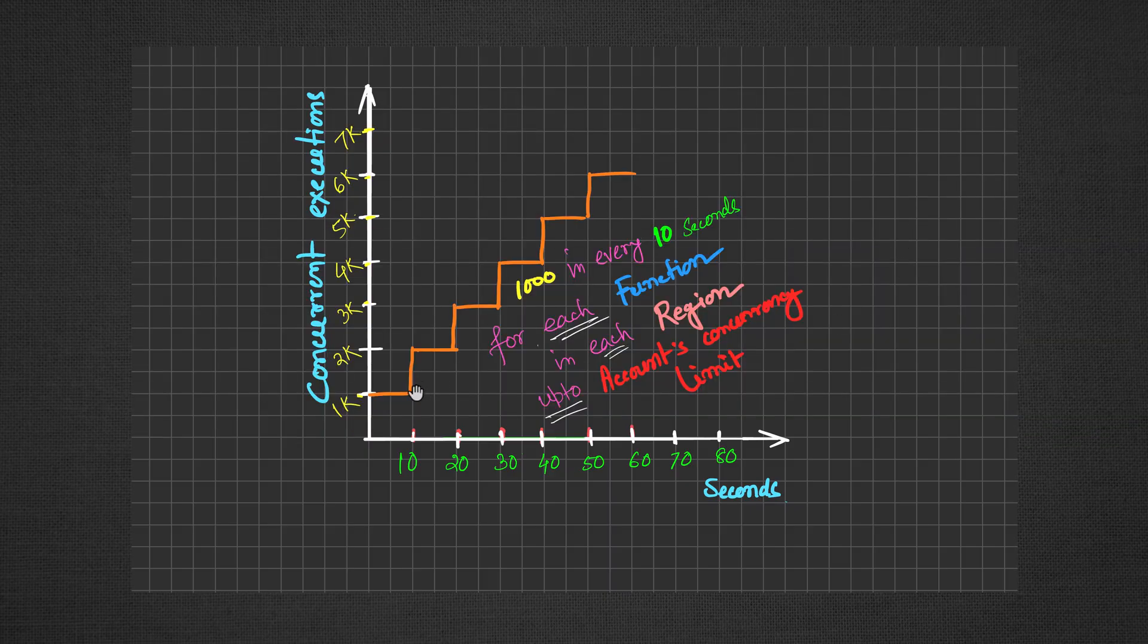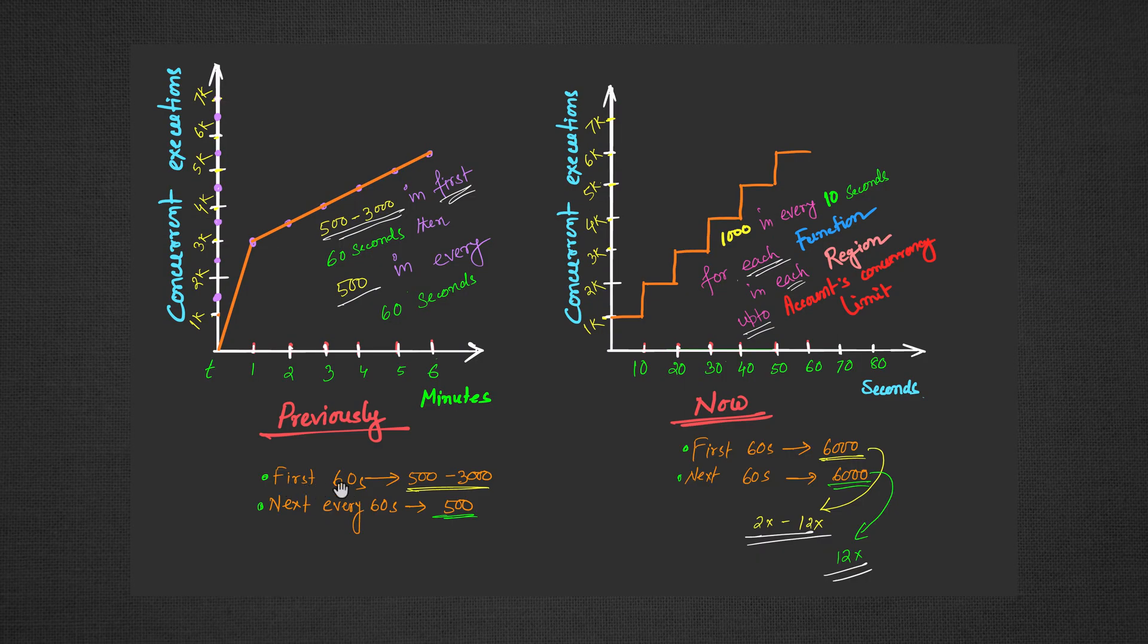However, now each function in each region can scale up at a rate of 1000 concurrent executions every 10 seconds until it hits the account's concurrency limit. To put it in perspective,